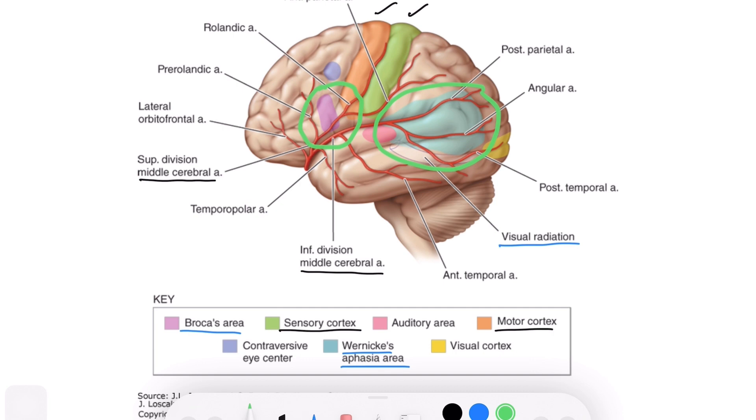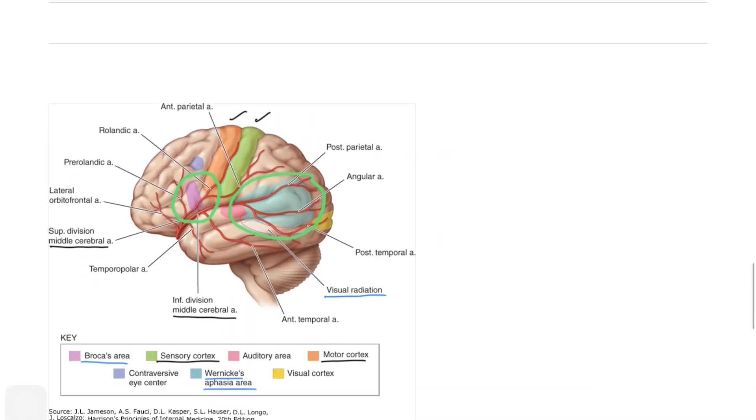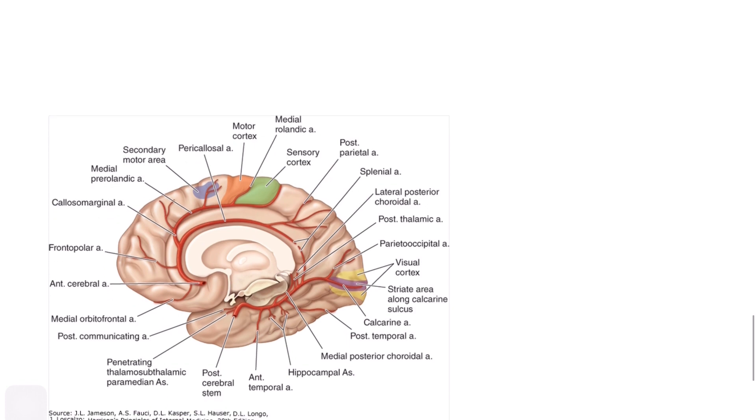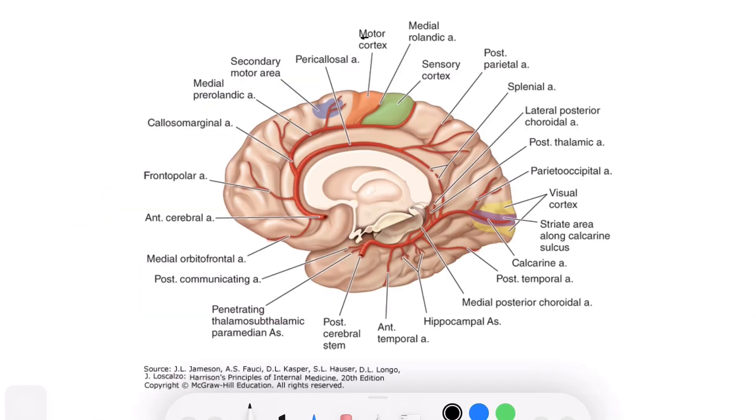Let's move on to anterior cerebral artery occlusion. It also has two branches. Occlusion of the proximal branch is well tolerated because of collateral supply by the anterior communicating artery and MCA. Occlusion of the distal ACA will lead to paralysis and sensory loss of the opposite leg and foot, weakness of the opposite arm, urinary incontinence because of paracentral lobule involvement, and abulia, which means delay in verbal and motor response.